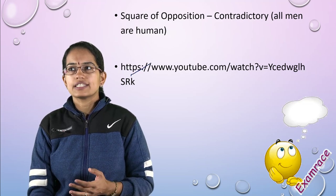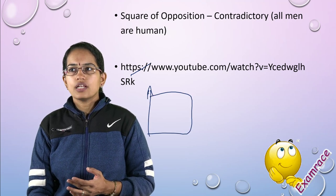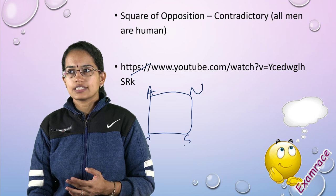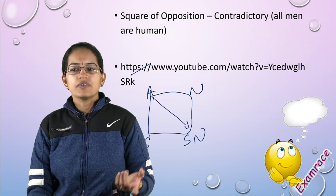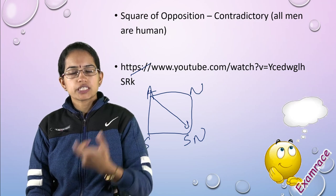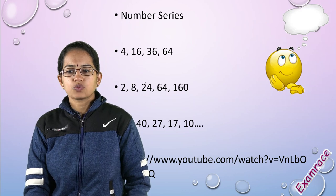Beware of sources, because many people talk about contradictory approach as part of syllogism, but this is part of square of opposition. We discussed this clearly in the video link. Contradictory is a relation between 'all' and 'some not'. 'All men are human' - the contradictory statement would be 'some men are not human'.